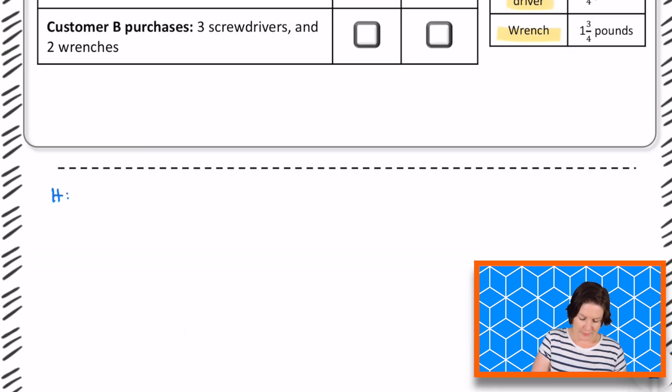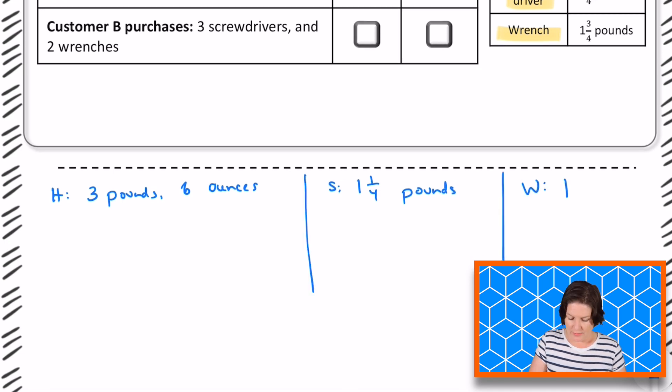The hammer is 3 pounds, 6 ounces. The screwdriver is 1 and 1/4 pounds, and the wrench is 1 and 3/4 pounds. Now, I see a lot of pounds going on here, but our answer, we're going less than or greater than 100 ounces. So we're going to be converting here. So I have my reference sheet right in front of me. I hope that you do too.